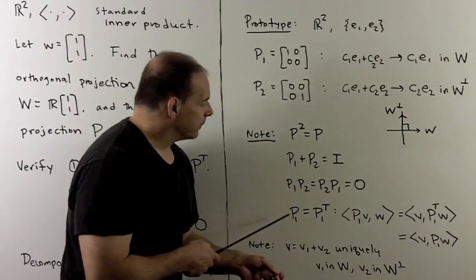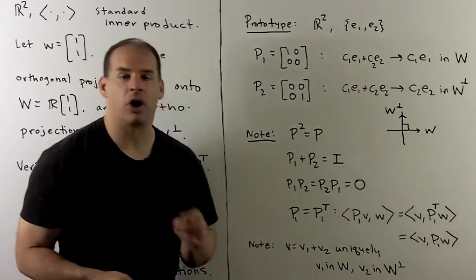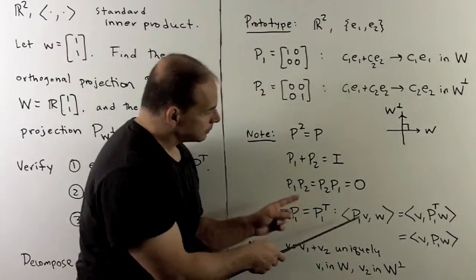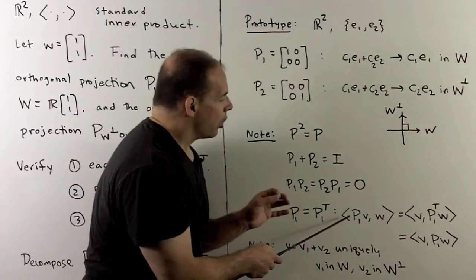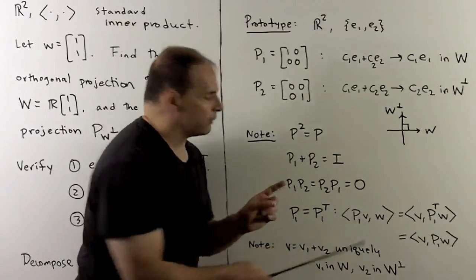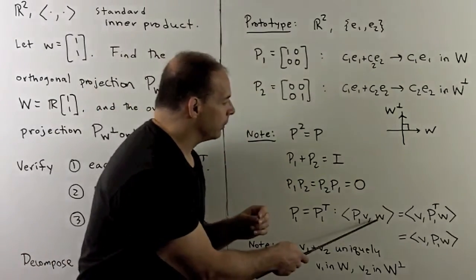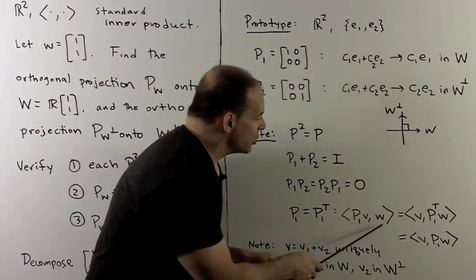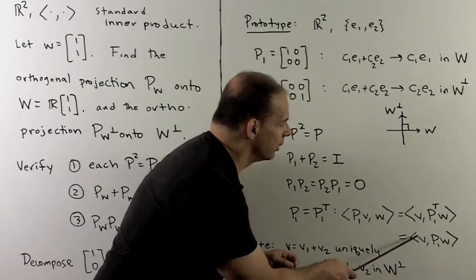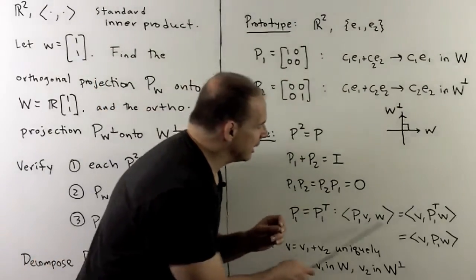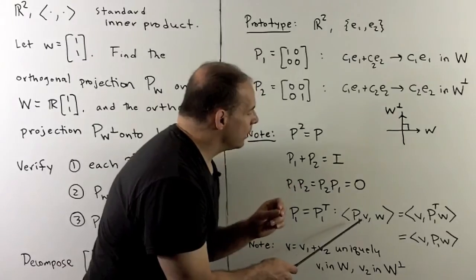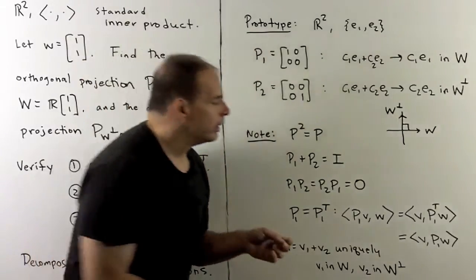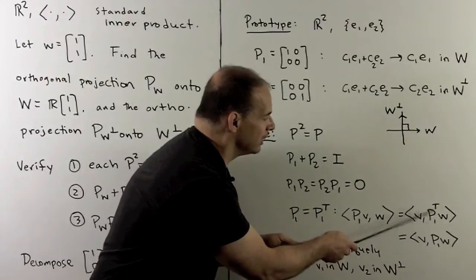The last property, P = P transpose, is a little tricky — we want to interpret it in terms of our inner product. In the first slot, this says: take our vector V, throw away the W⊥ part, take the inner product with W. We're not interested in the part in W⊥, so we get the same answer as stripping off the W⊥ part and then taking the inner product with V. The way we get the transpose in the picture is by pushing P1 to the other side, giving P1 transpose. If this holds for any V and W, then these two operators must be equal.